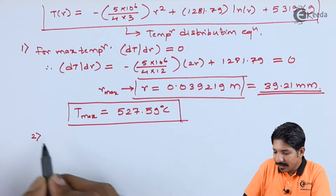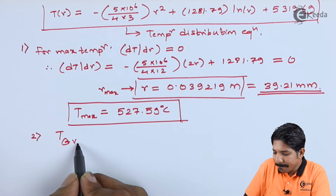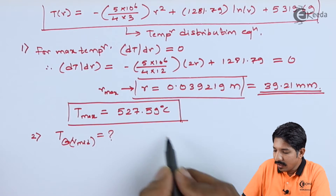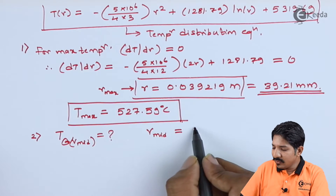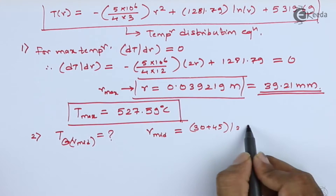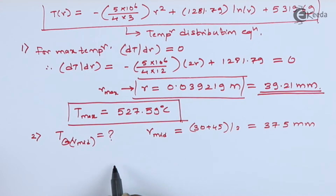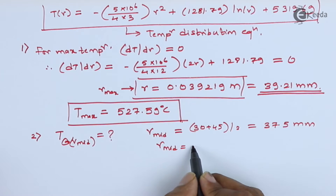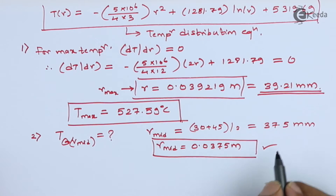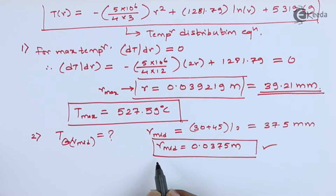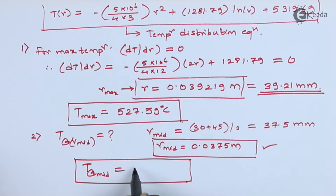For the second part, the temperature at mid-thickness is found at r_mid = (30 + 45)/2 = 37.5 mm = 0.0375 m. Substituting this value into the general temperature distribution equation gives the temperature at mid-thickness as T_mid = 525.10°C.